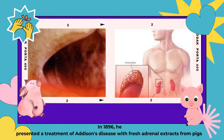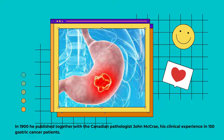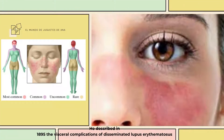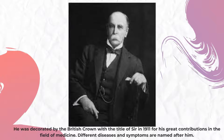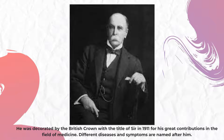In 1896, he presented a treatment of Addison's disease with fresh adrenal extract from pigs. In 1900, he published together with Canadian pathologist John McKeown his clinical experience in 150 patients with gastric cancer. He described in 1895 visceral complications of disseminated lupus. He was decorated by the British Crown with the title of baronet in 1911 for his great contributions in the field of medicine.